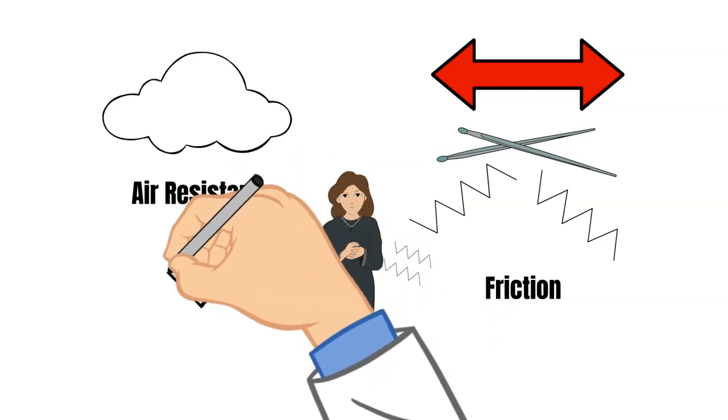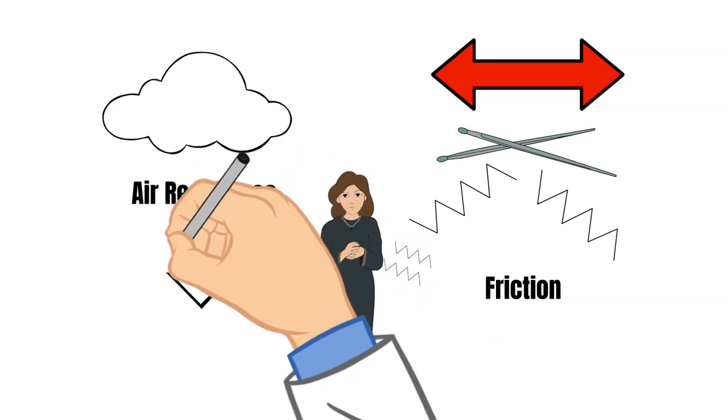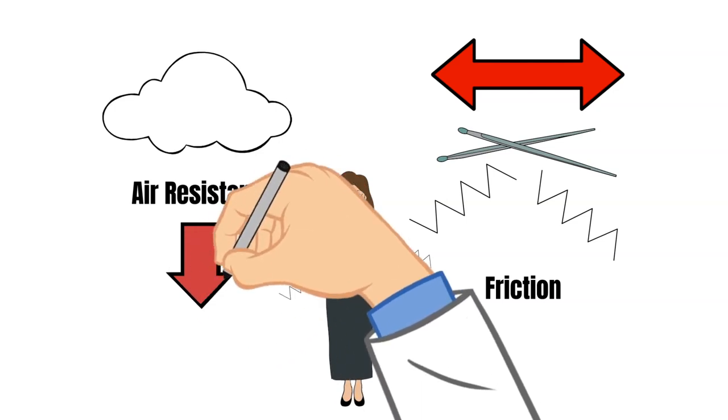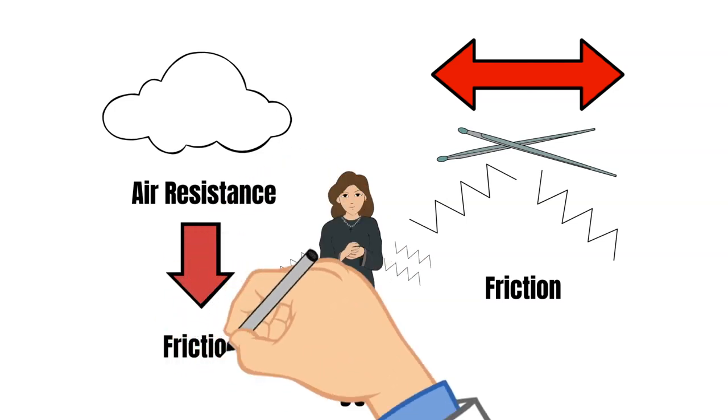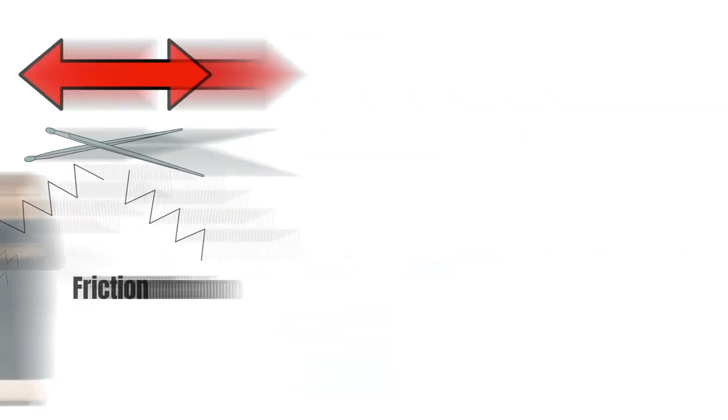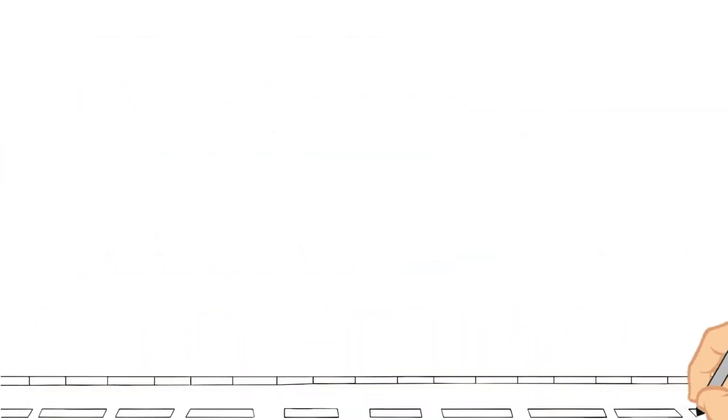Air resistance is a type of friction. It is the air acting upon something traveling in a straight line and the friction slowing the object down.